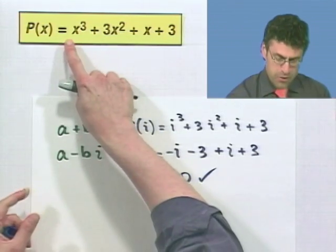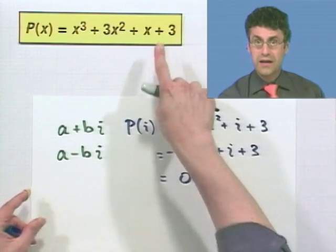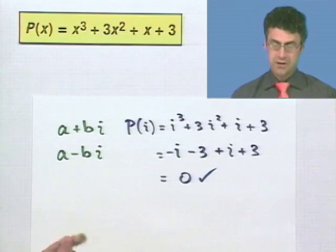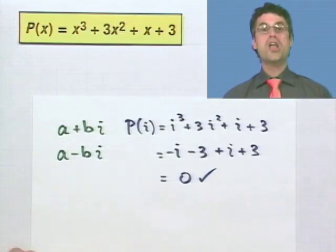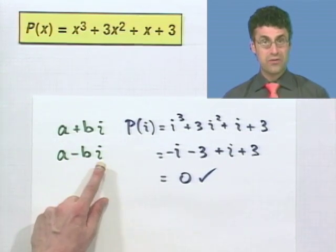But look, all the coefficients are real numbers. 1, 3, 1, 3. So what does that mean? It means that for free, by the conjugate pair zeros theorem, I actually know another zero. Not just i, but its conjugate, which would be negative i.